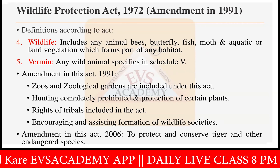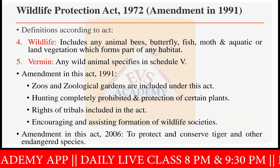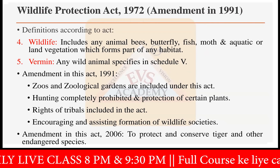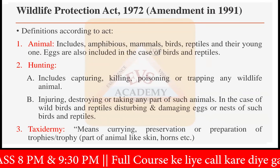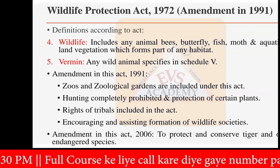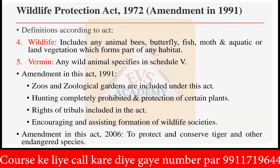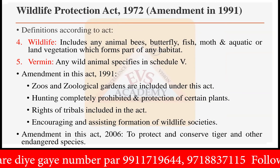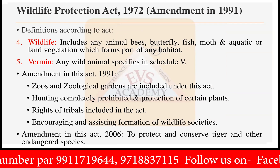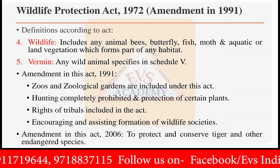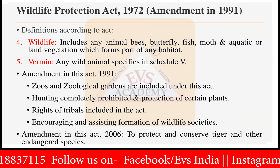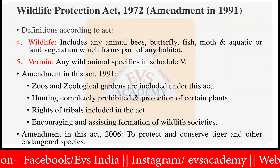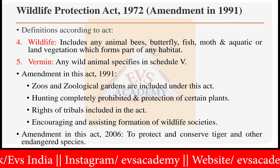So two amendments are there. A few definitions we have already seen: the definition of animal, definition of hunting, what is taxidermy, the definition of wildlife, and the meaning of vermin. That we have all covered, and then after that the 2006 amendment in the Wildlife Protection Act of 1972, to protect and conserve the tiger and other endangered species.